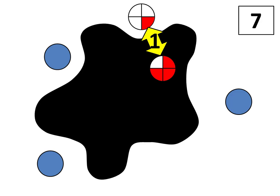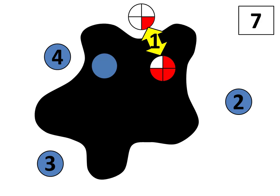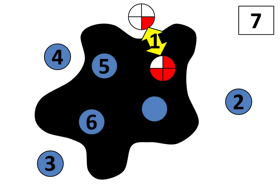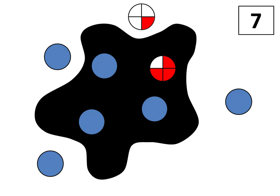Now from one I'll count on to seven: two, three, four, five, six, seven. The total inside the splat is three and three-fourths.